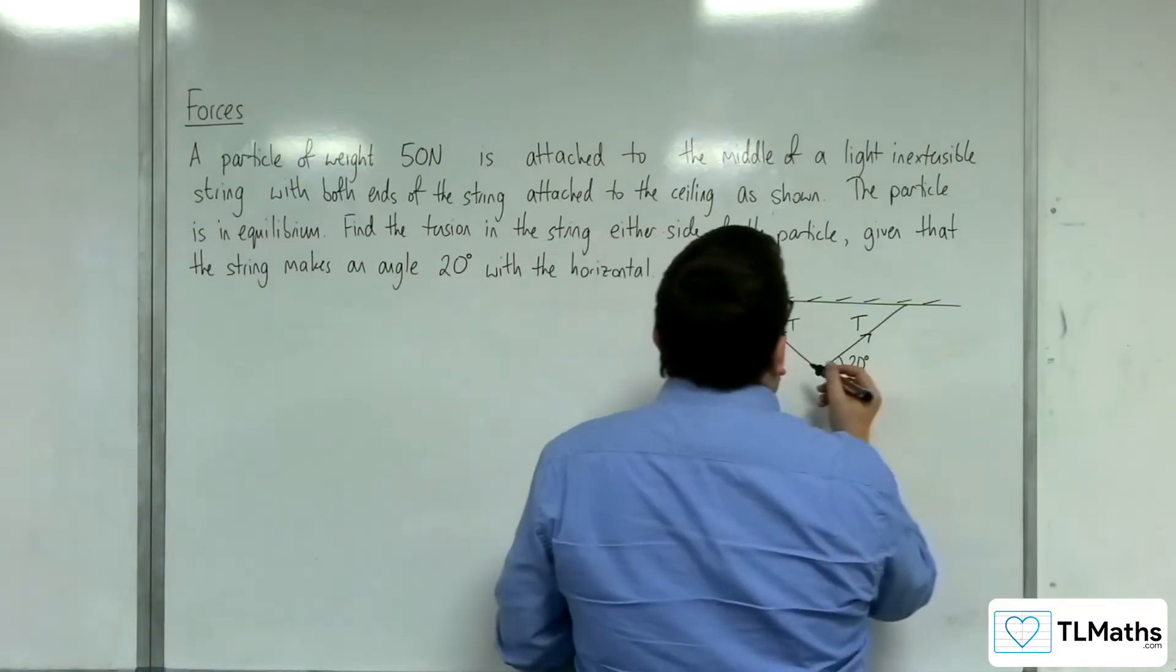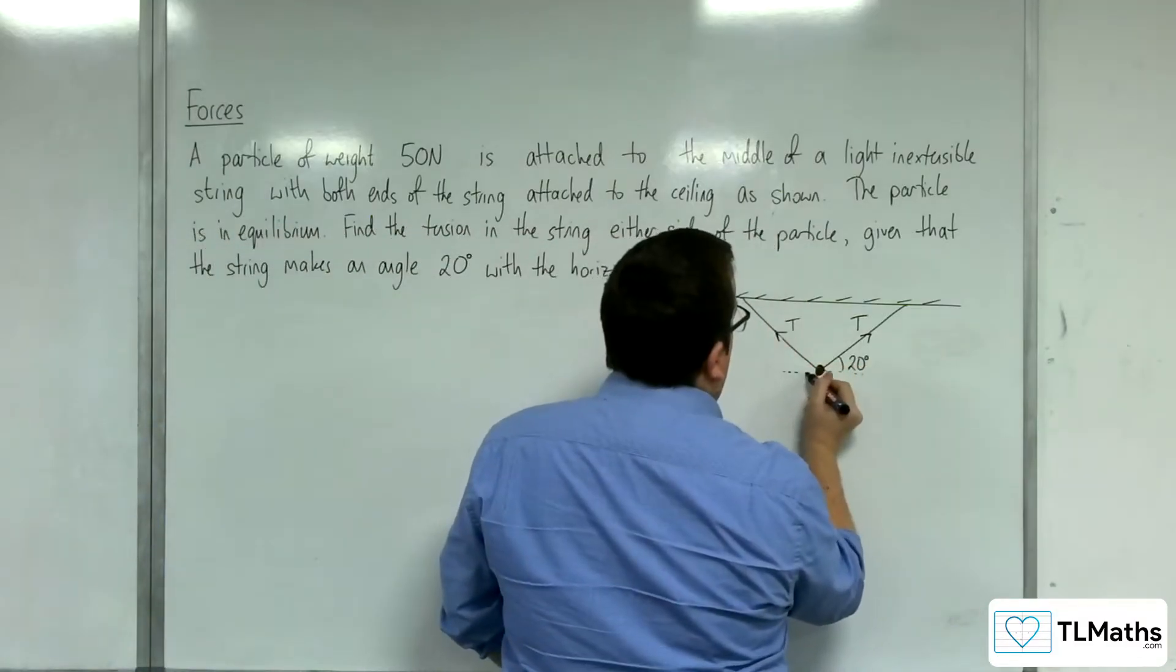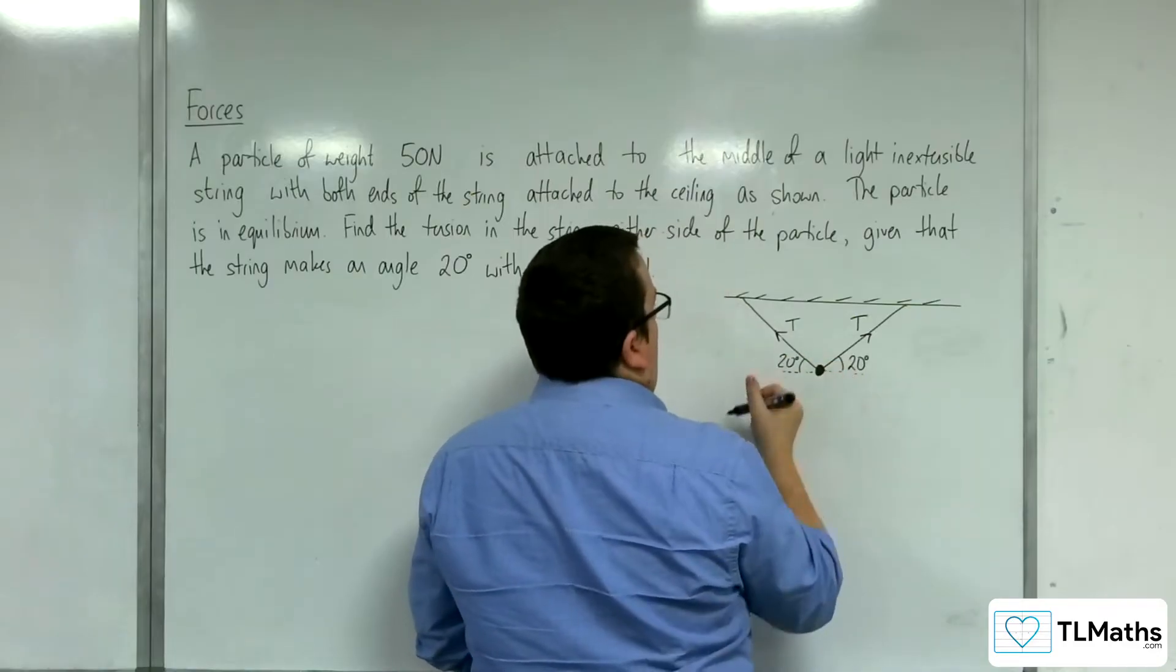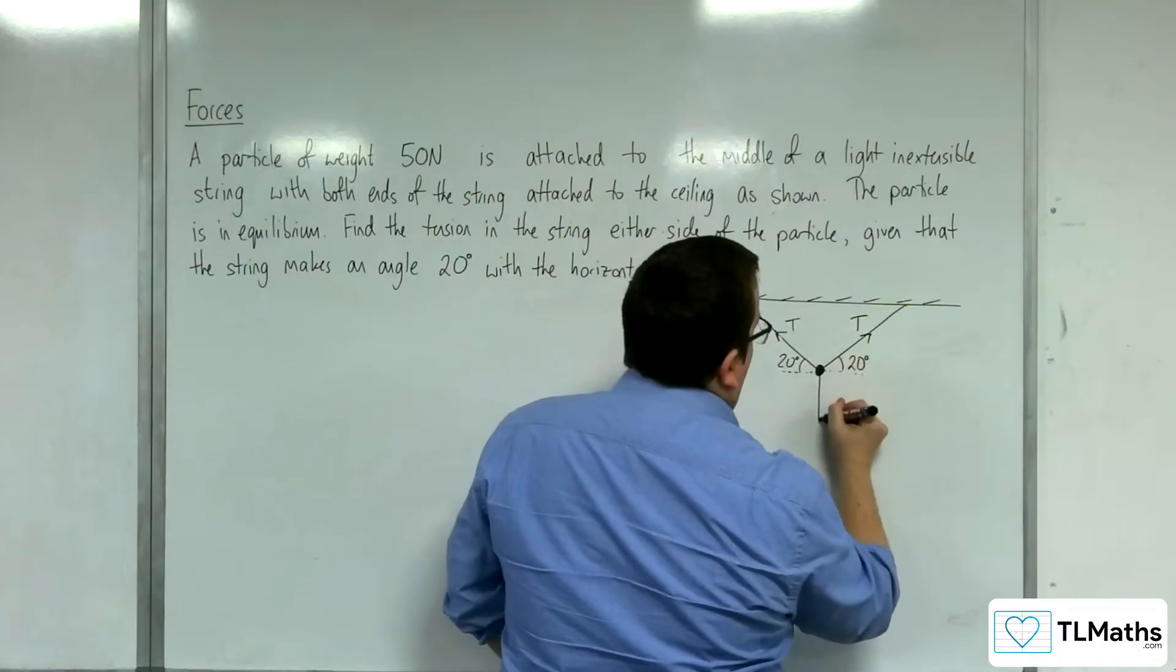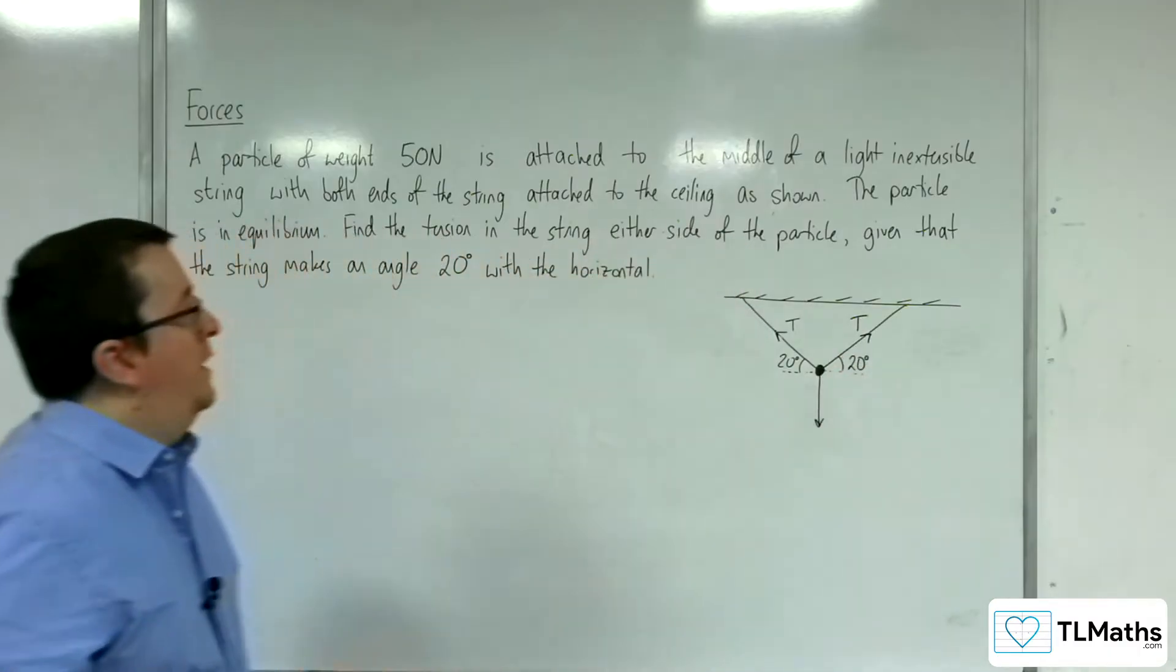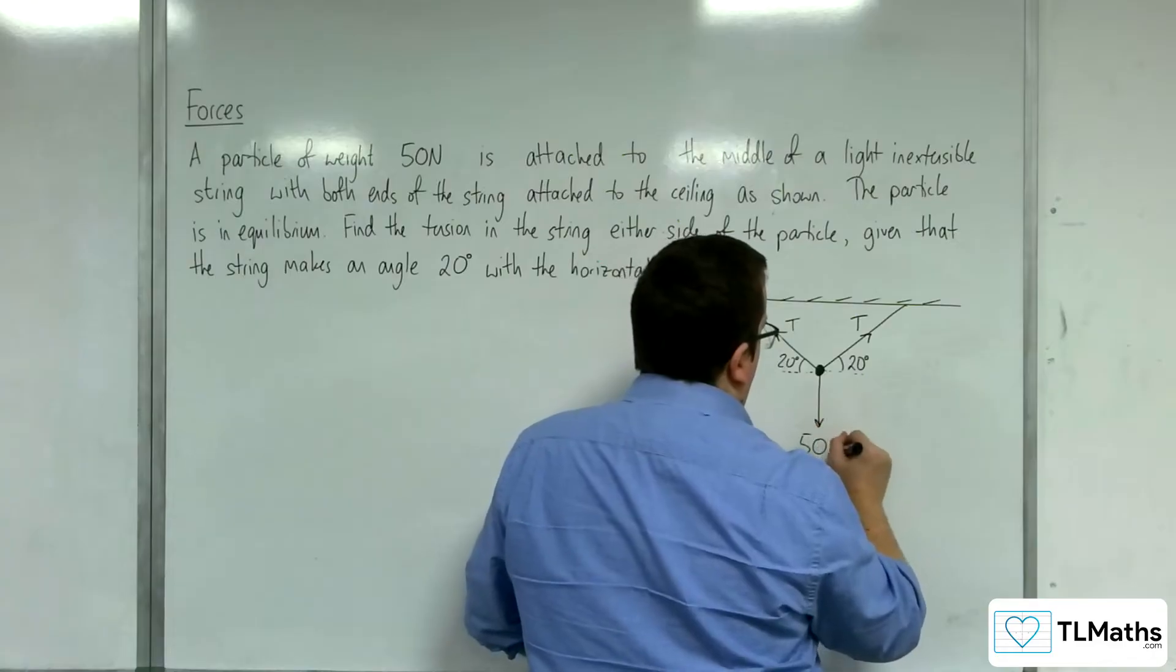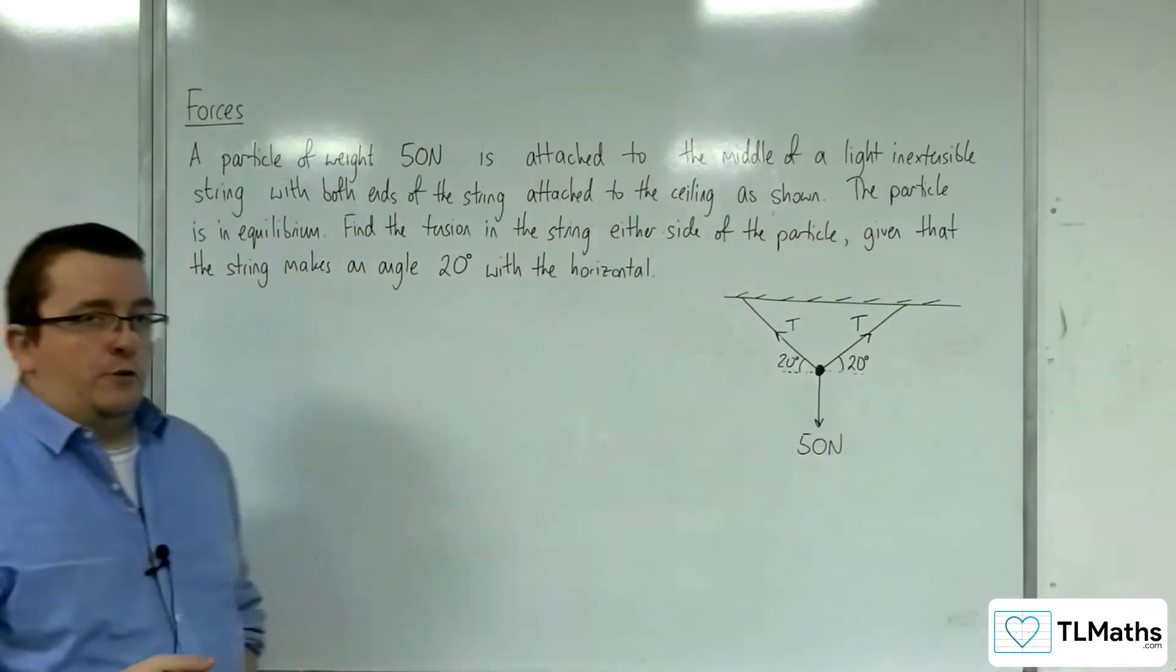So, effectively, we've got a mirror image picture here, where this is 20 degrees as well. And we've got the weight working vertically downwards, which is 50 newtons. So, this is my diagram.